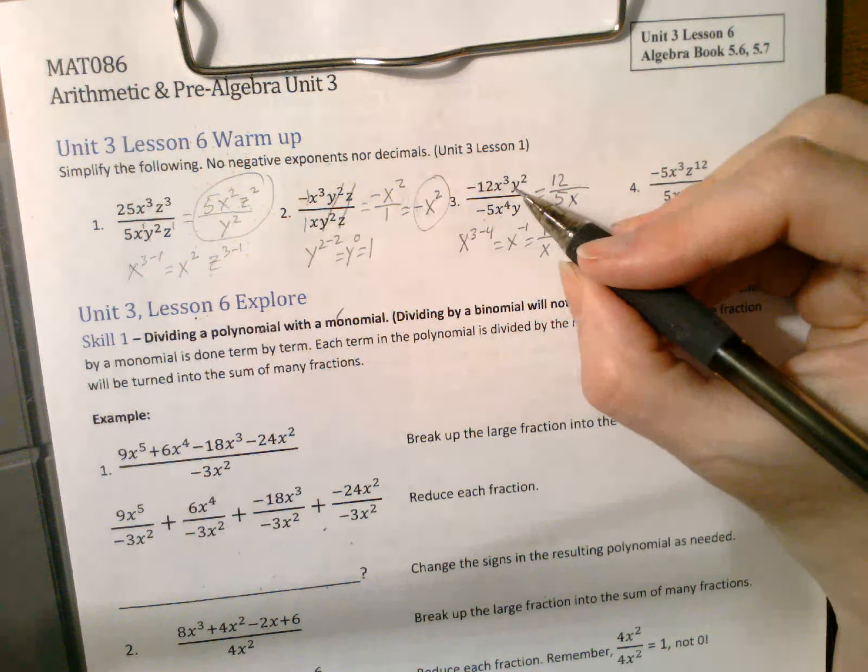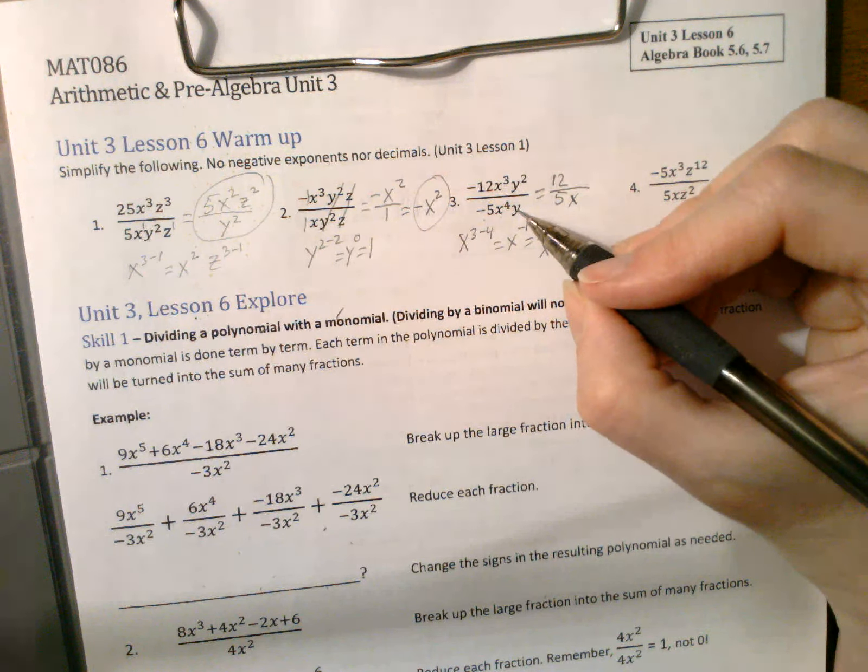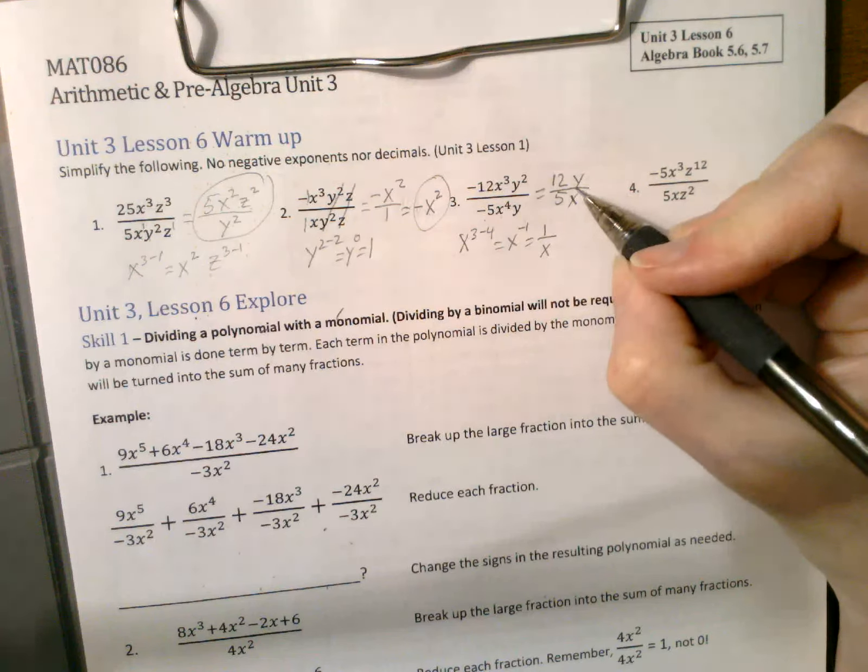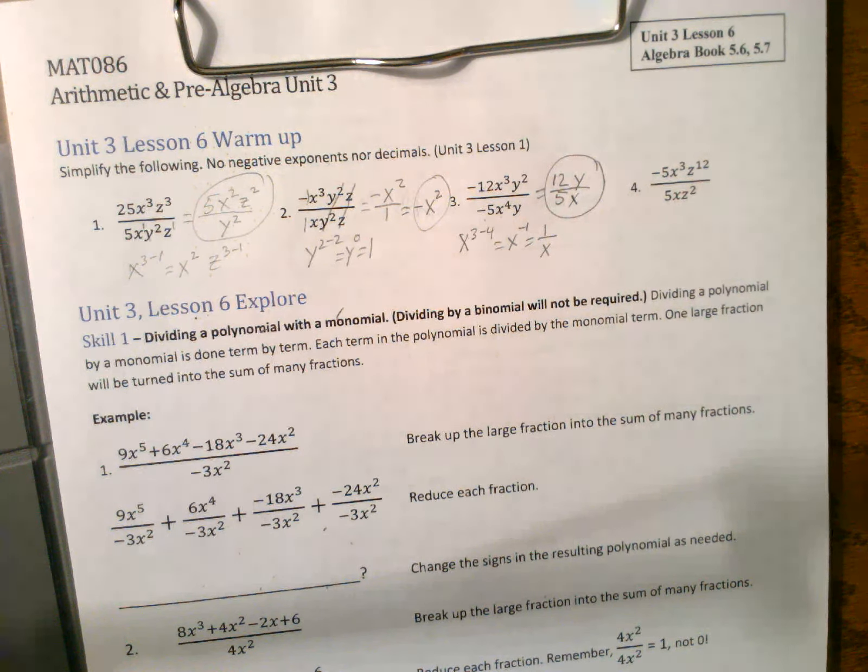So keep that x on the bottom. And then we have y to the 2nd minus 1. That means we have an extra y on top.